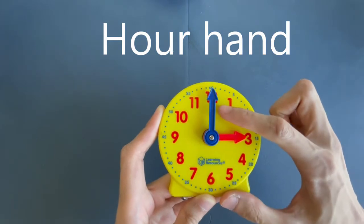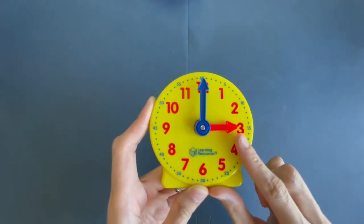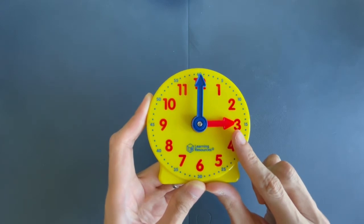So, the minute hand is the longer hand, and the hour hand is the shorter hand.